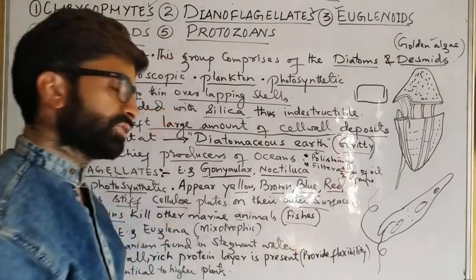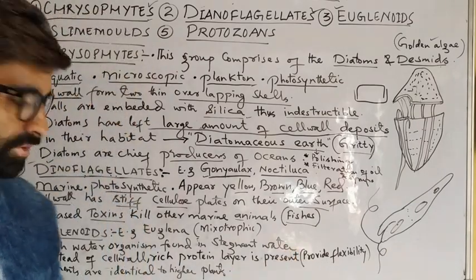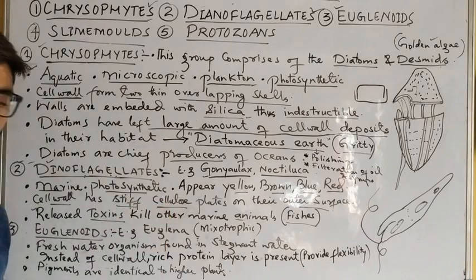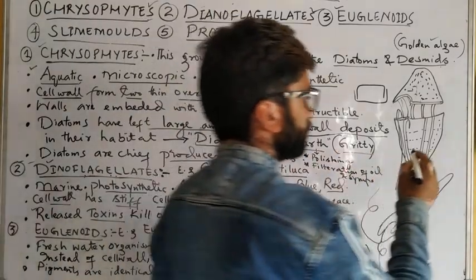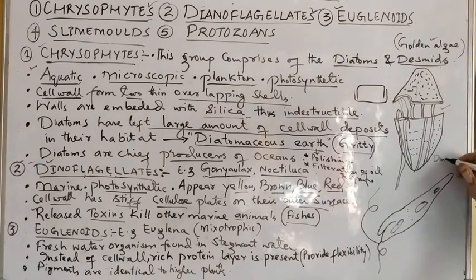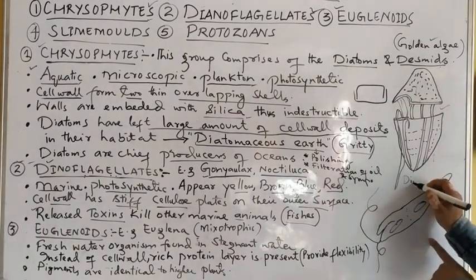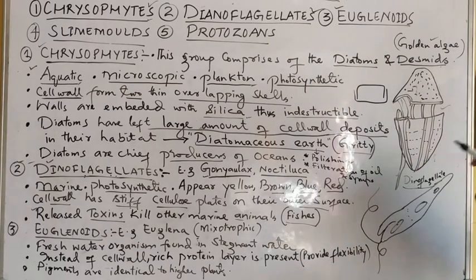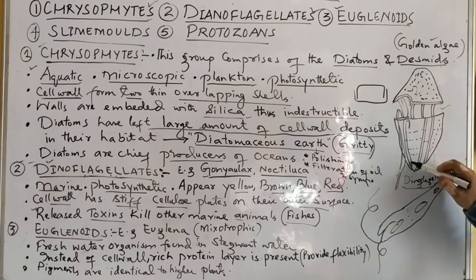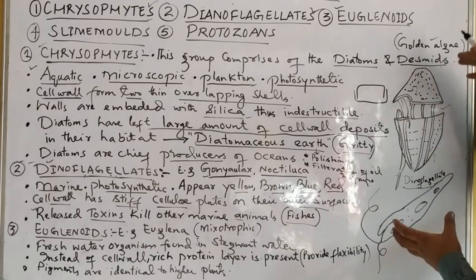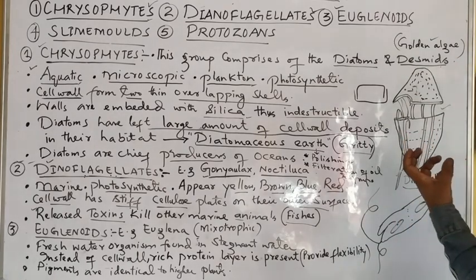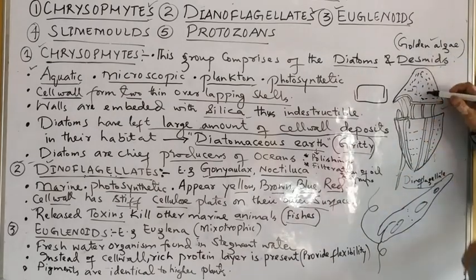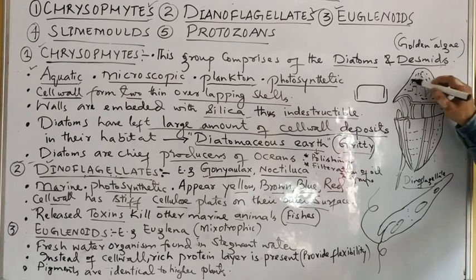This toxic material kills small and large fish in the ocean. Dinoflagellates have an armored body shape with cellulose plates visible on the outer surface, and the two flagella — one longitudinal and one transverse — are key structural features.